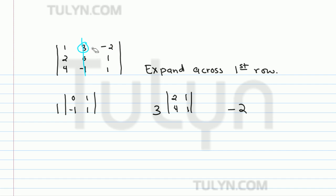Finally, we do it again for negative 2. Negative 2 is right here, and the row it's in is the first row and the column is the last column, so we get rid of that. What's left over is 2, 4 is the first column, and 0, negative 1 is the last column.